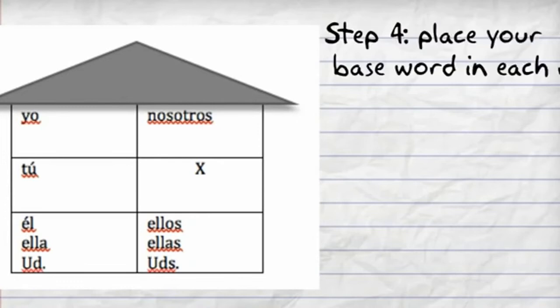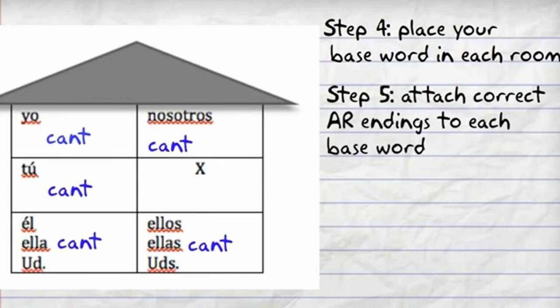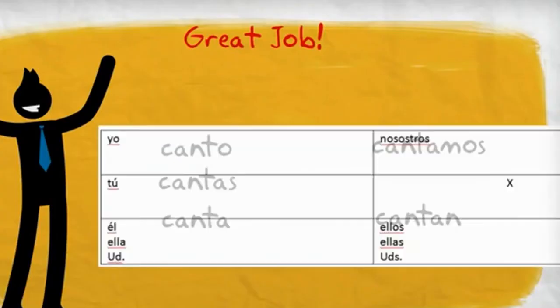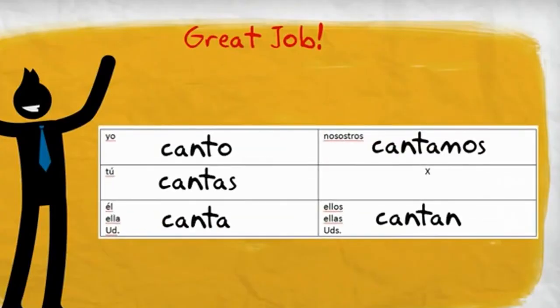Step four: place your base word in each room with the subject pronouns. Step five: attach the correct AR verb ending to the correct base word. Yay! You just conjugated your first AR verb.